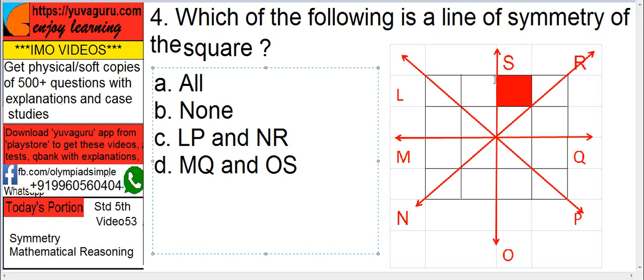Now, a square has 4 lines of symmetry: 1, 2, 3, 4. If you fold it along any of these lines, it will be exactly the same.